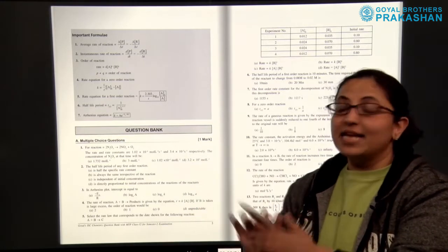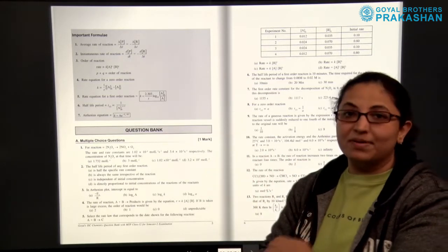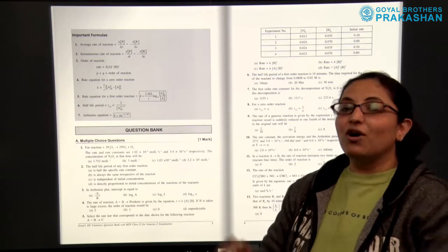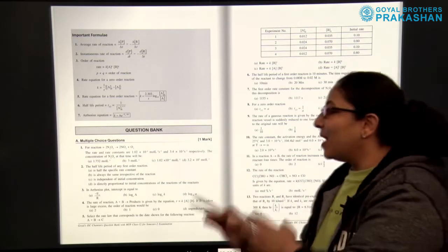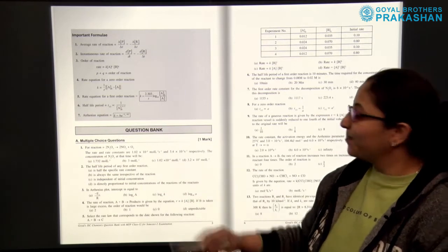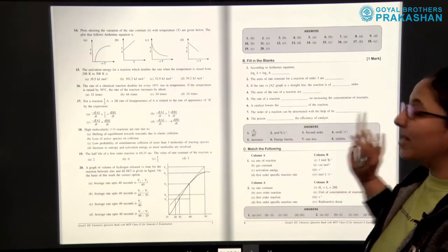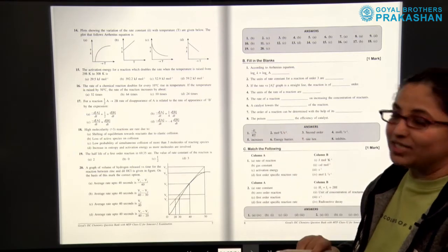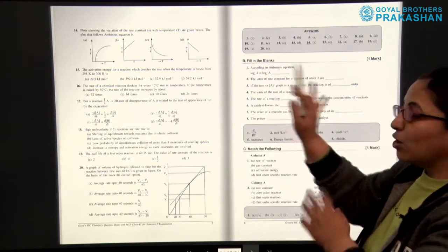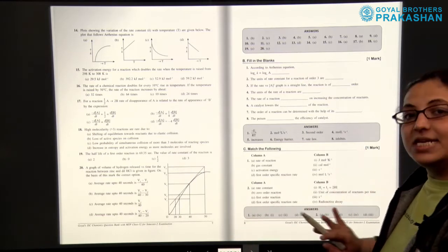After the summary we have the question bank, which is a very rich question bank because many questions from previous years' question papers are included. The pattern of these questions is similar to the pattern of the specimen question paper released by the council. In the starting we have multiple choice questions, which are one-mark type questions. This is a solved question bank — the answers are provided in the grey box for objective multiple choice questions and fill in the blanks.